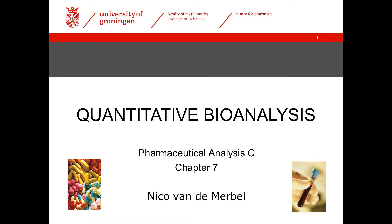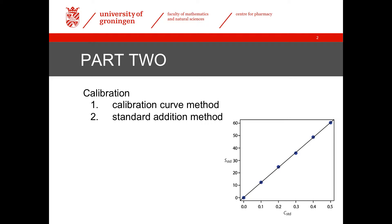Welcome back. This is the second part of the video lecture on quantitative bioanalysis. I will discuss the options to calculate the unknown concentration of an analyte in a sample by using calibration. Normally, we make use of the so-called calibration curve method, which is rather straightforward. If this doesn't work, there is also a possibility to use an alternative, called the standard addition method.